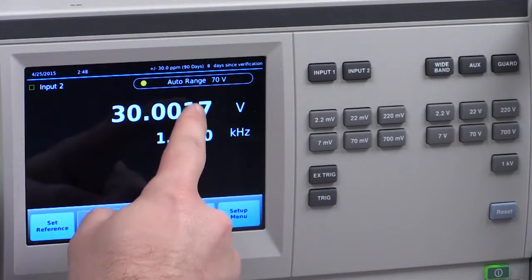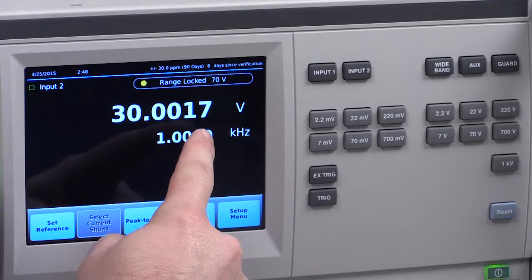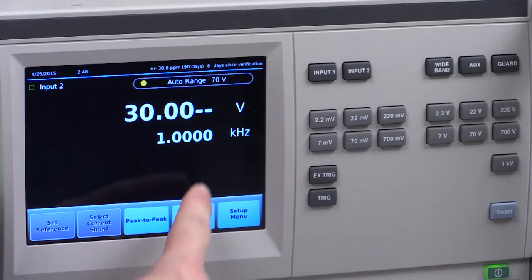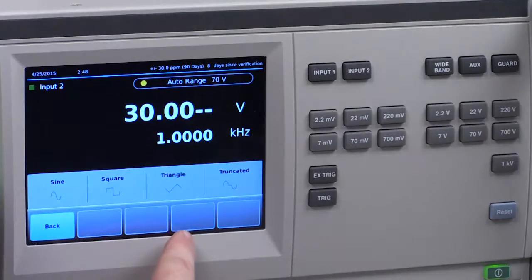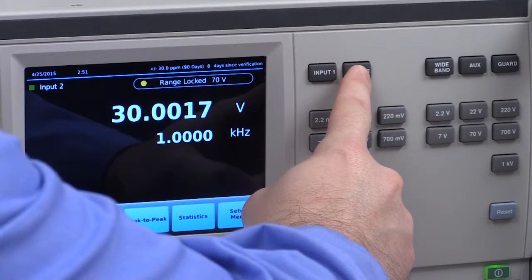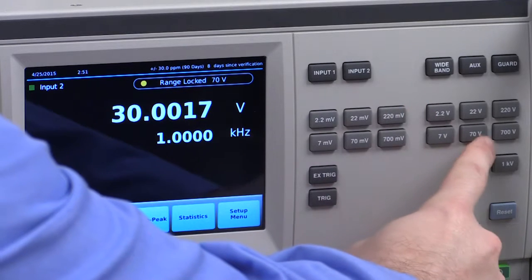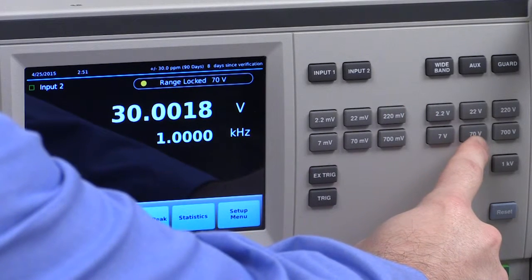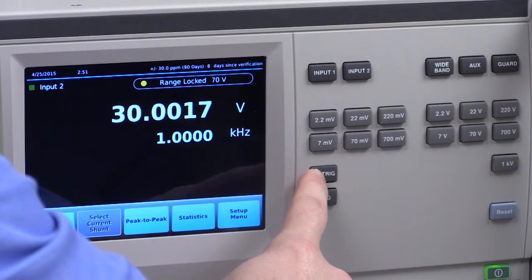The first major improvement brings the 5790B into the 21st century by adding a 5.5 inch capacitive touch screen display and a graphical easy to navigate user interface. To complement the new touch screen display, the front panel provides direct access to the most commonly used keys to change range and input.